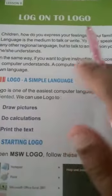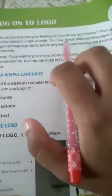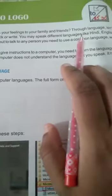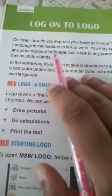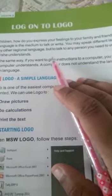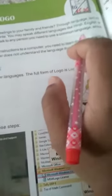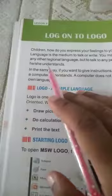Lesson number 8 is log on to logo. Children, how do you express your feelings to your family and friends? Through language, isn't it? Yes. Language is a medium to talk or write. You may speak different languages like Hindi, English or any other regional language. But to talk to any person, you need to use a common language which he or she understands.